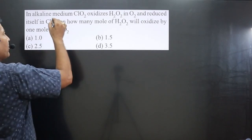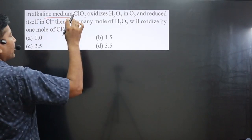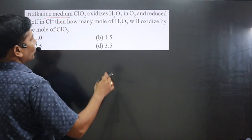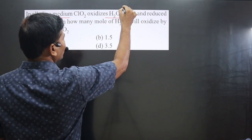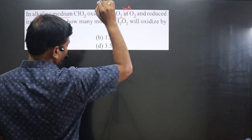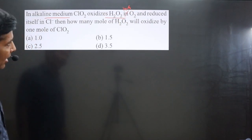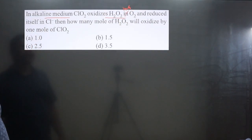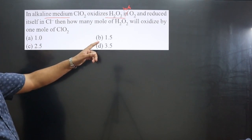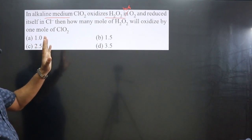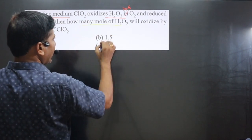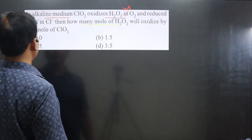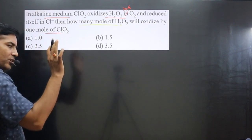The question says: in alkaline medium (basic medium), ClO₂ oxidizes hydrogen peroxide into O₂ gas and is itself reduced to Cl⁻ (chloride ion). We have to calculate the number of moles of hydrogen peroxide that will be oxidized by 1 mole of ClO₂.